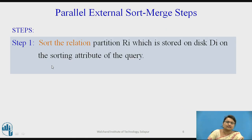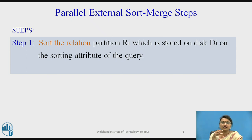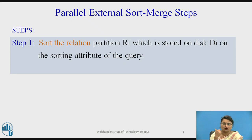Let us see the steps. The first step is to sort the relation partition ri, stored on disk di, on the sorting attribute of the query. We sort every partition already stored on each disk. Every disk is parallelly sorting its data.